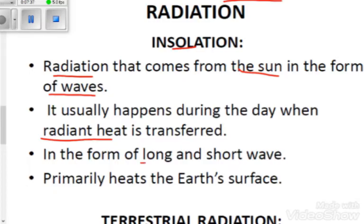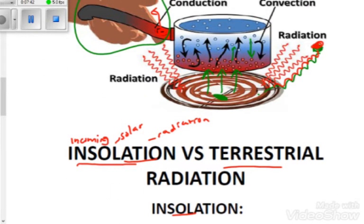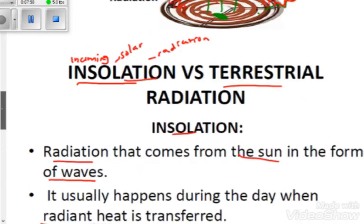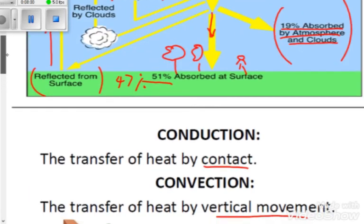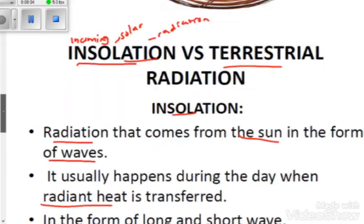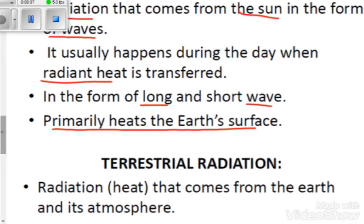Insolation occurs in the form of long and short waves. A short wave has a shorter wavelength, while a long wave travels a longer distance from the Sun. Insolation primarily heats the Earth's surface — 51% of it heats the Earth's surface, which is why we say it primarily heats the Earth's surface.